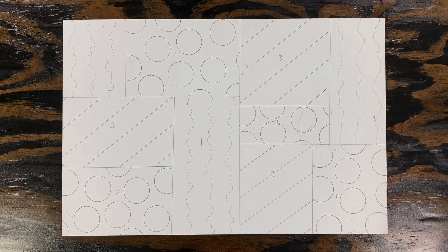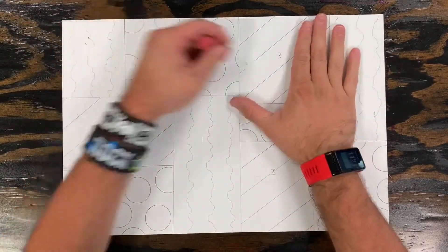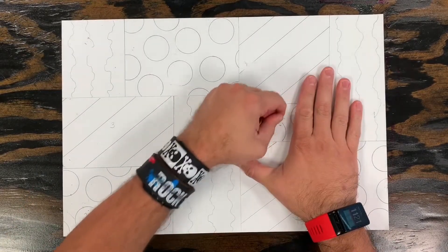Before you start coloring, the first thing you need to make sure you do is erase all of the numbers from the spaces. We don't want them to show up underneath the colors when the artwork is complete.